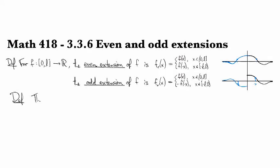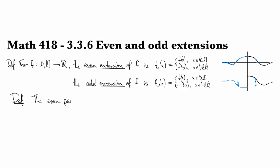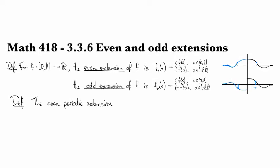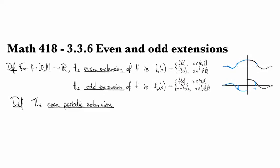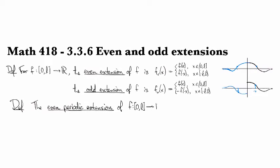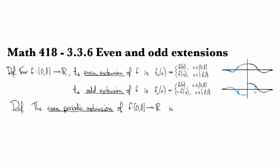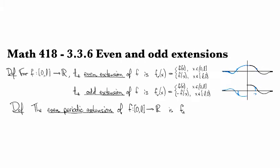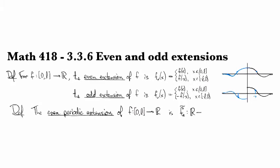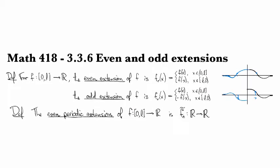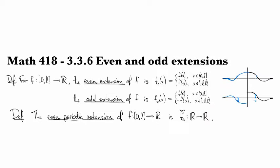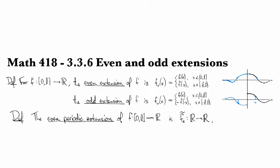And then we also have the even periodic extension. And so the even periodic extension of a function that started out only defined on some asymmetric interval, this is going to be, now we'll say, so it's the periodic extension of the even part. And now this is going to be a function defined on all of R to R, because when we extend by periodicity, that ends up extending the function, so that is now defined on the entire real line. So this is the 2L periodic extension of the even part.